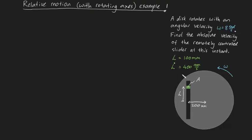G'day guys, in this video I've got a fairly challenging relative motion problem for you. A disk rotates with an angular velocity omega, which is 8 radians per second.